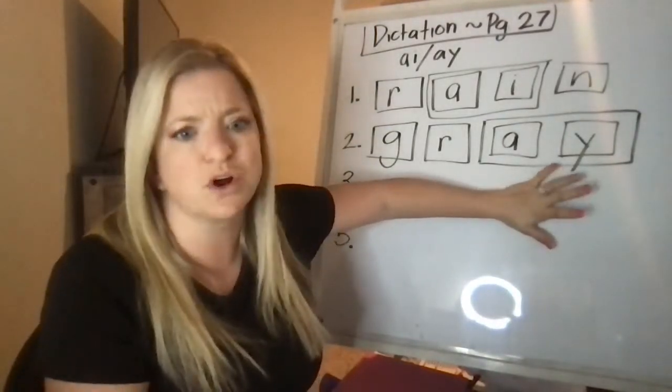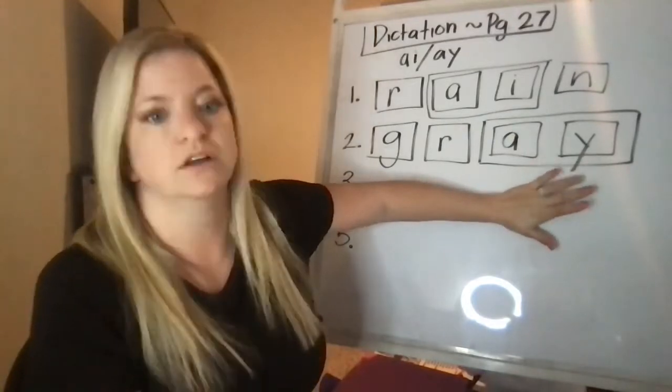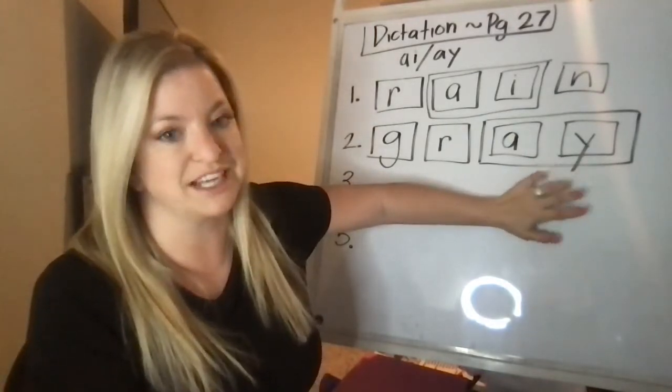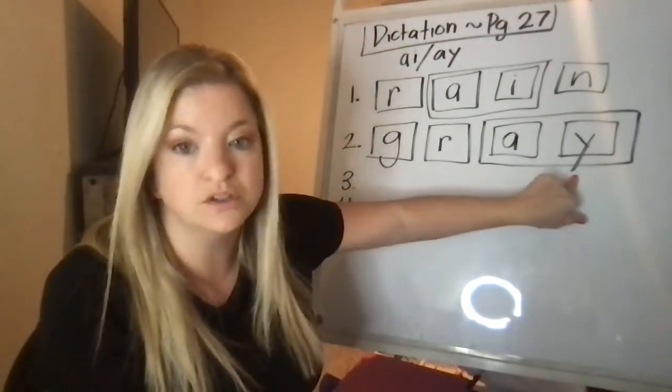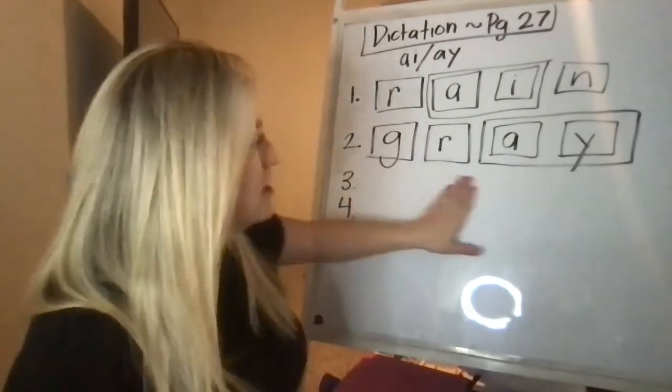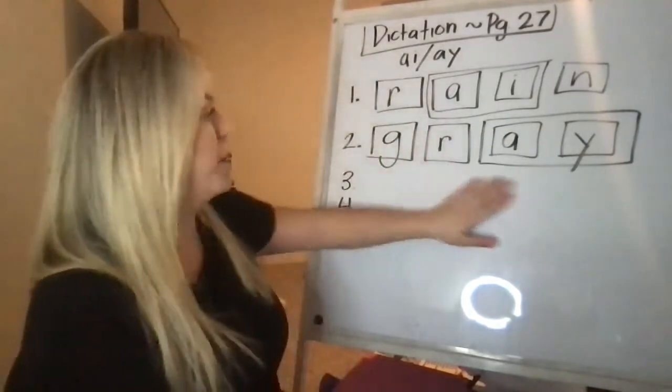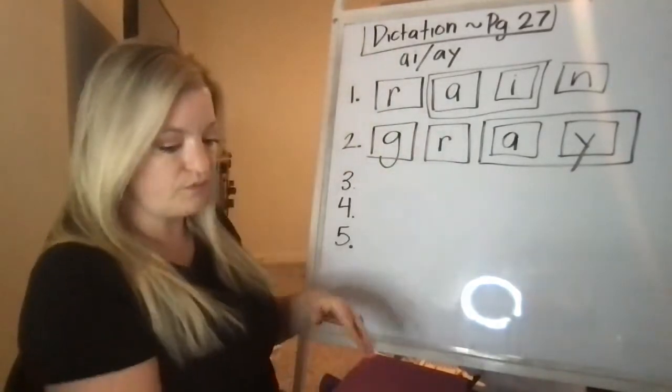Unless maybe it's like a nonsense word or one in a million, you will have that. But normally it's always an A-Y at the end, like a tray of food, a ray of sunshine. A-Y is always going to be at the end. All right. The next one is play.